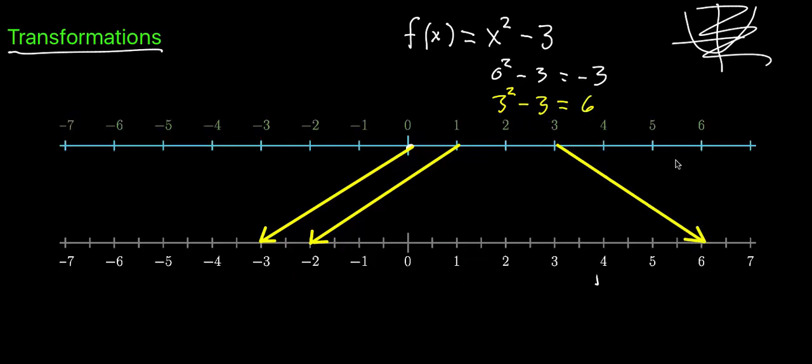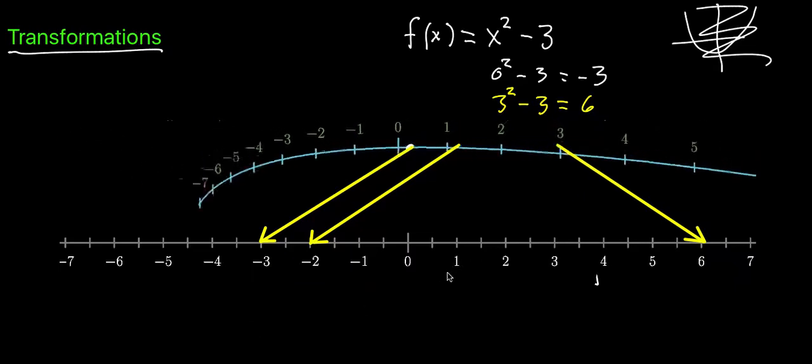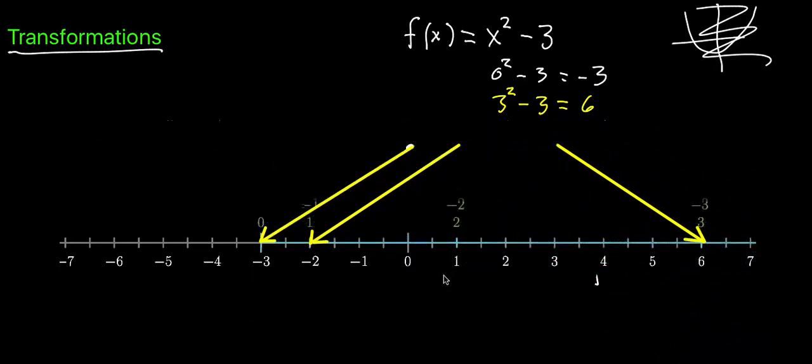With a little animation, we can watch this happen. We can actually watch what it looks like for all these numbers to move to their corresponding outputs. So here we go—each number will move over and land on its output.